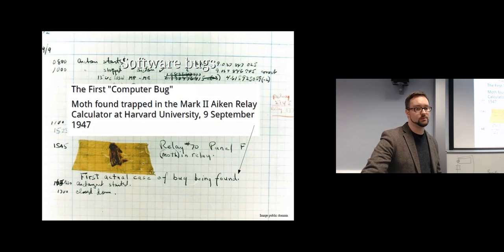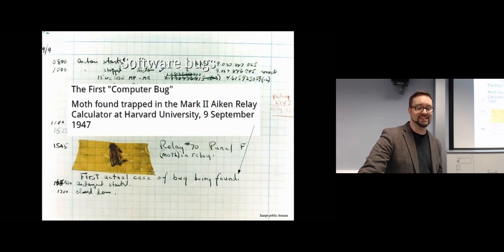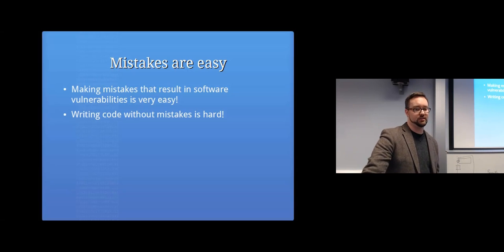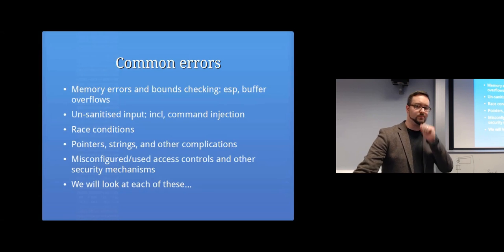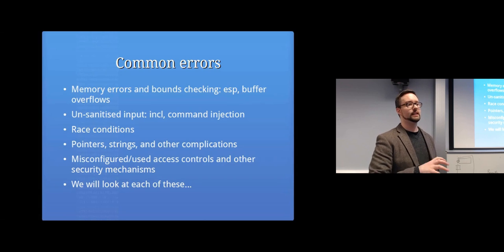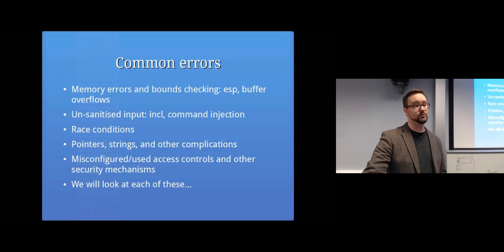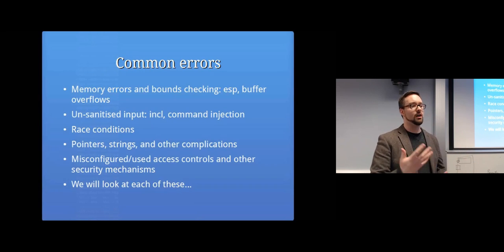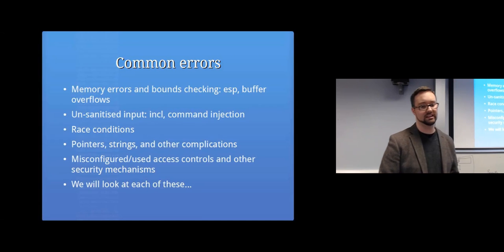Software bugs are a big problem and have been for a really long time. The name 'bug' comes from an actual moth found in a computer at Harvard University back in 1947. The kinds of mistakes that happen include bounds checking - nothing in the code checked how long the input was when storing it. Unsanitized input is a huge problem: when we get something from the user and don't check what they've entered. Race conditions are when timing is off within your code. Pointers and strings can be done badly, and misconfigurations and incorrect access controls can also cause security problems.